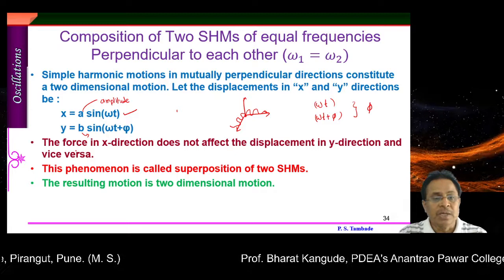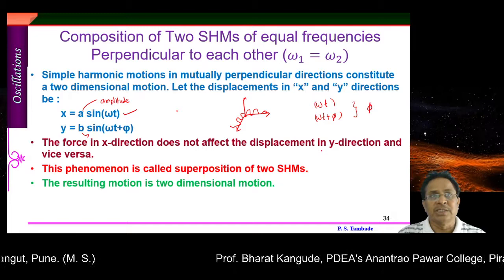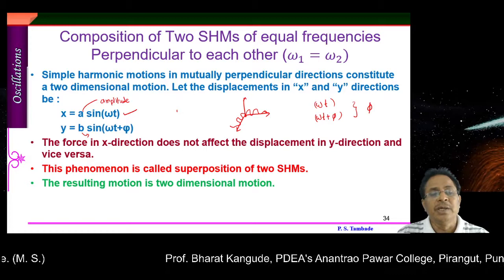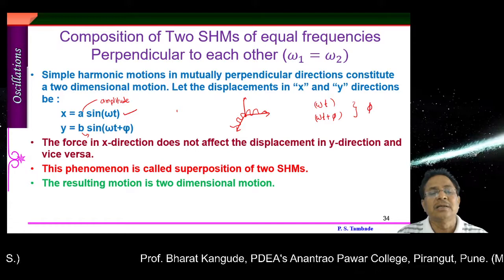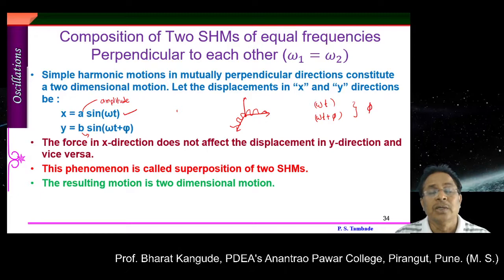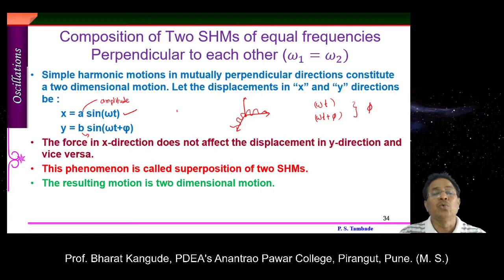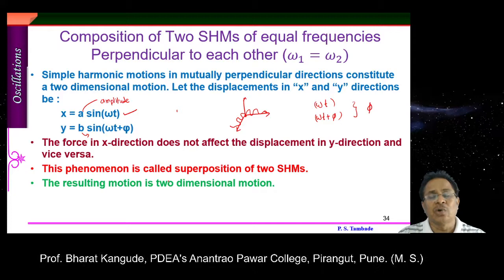The force in the x direction does not affect the displacement in the y direction, or vice versa — they don't cancel each other. Both forces act simultaneously and independently, and the resultant is the resultant of these two different types of SHMs. This phenomenon is called superposition of two SHMs, or composition of two SHMs. In optics you might have heard of this phenomenon — it is called interference.